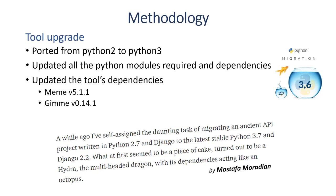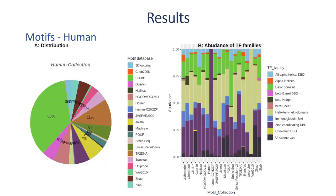Moving to our results, I'll start with the motif collection. For the human, we had a motif collection of about 1,400 motifs. The distribution to different databases is shown here, with the greatest contributor being the JASPAR database. On the right, we can see the distribution according to transcription factor families. There are families which are consistent across the different databases, including the basic domain, the helix-loop-helix domain, and the zinc finger domain — they are distributed in almost each and every database.